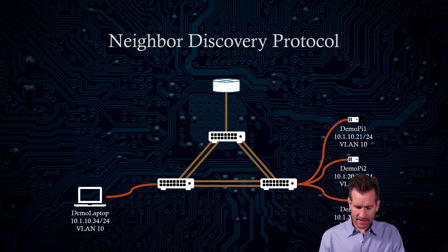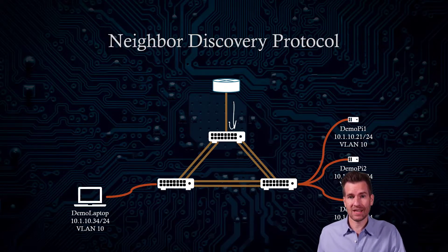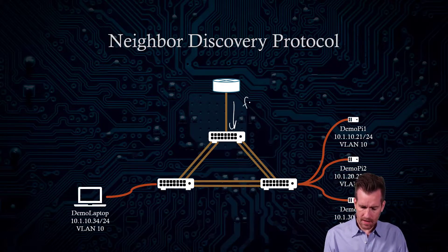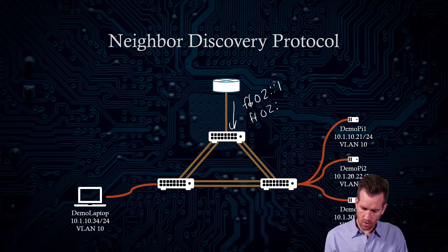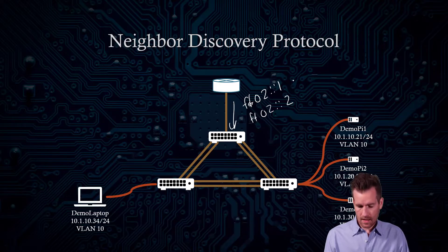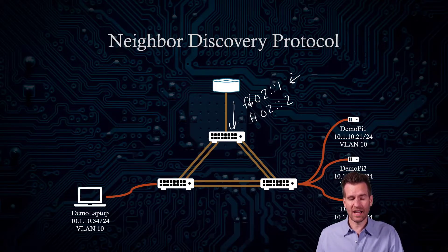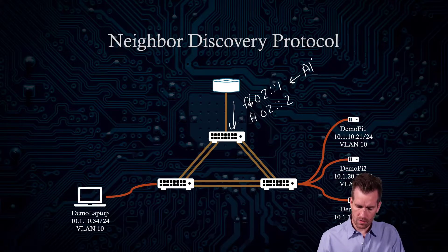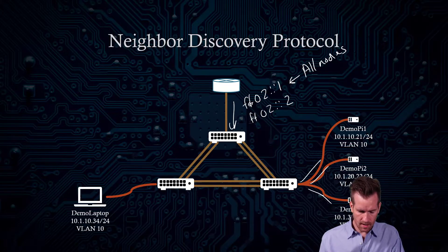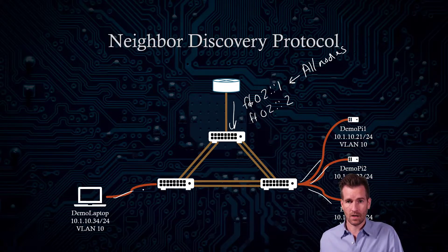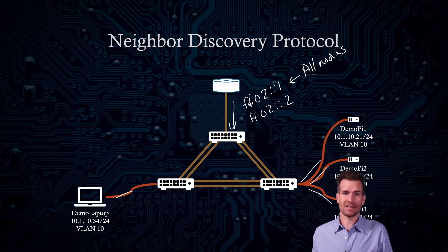When a router connects to your network, it will join a couple of different multicast groups. One of them is FF02::1, and the other is FF02::2. FF02::1 is the all-nodes group — that's the same multicast group that all of your machines on your network are going to be a part of, and that is what's taking the place of a broadcast.